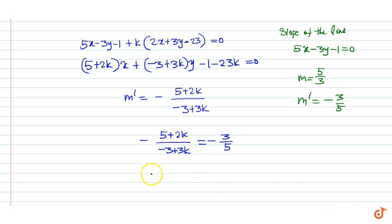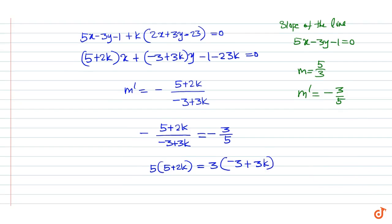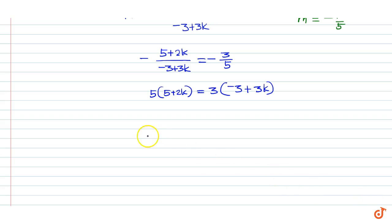This gives 5 into (5 plus 2k) equal to 3 into (minus 3 plus 3k). That is, 25 plus 10k equal to minus 9 plus 9k. That is, k is equal to minus 34.